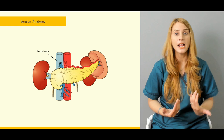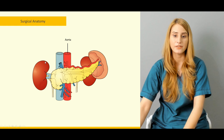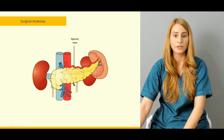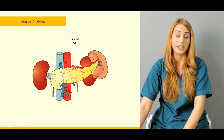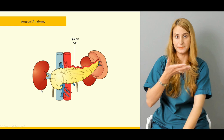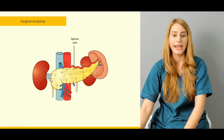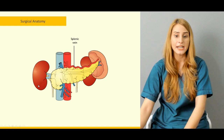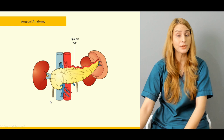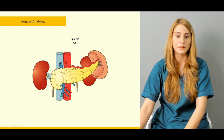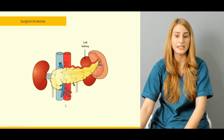You can see the portal vein, the inferior vena cava, the main abdominal aorta, and the splenic veins in the diagram. The splenic artery is related to the tail and body of the pancreas. The splenic vein comes from the spleen and combines with the superior mesenteric vein to form the portal vein.